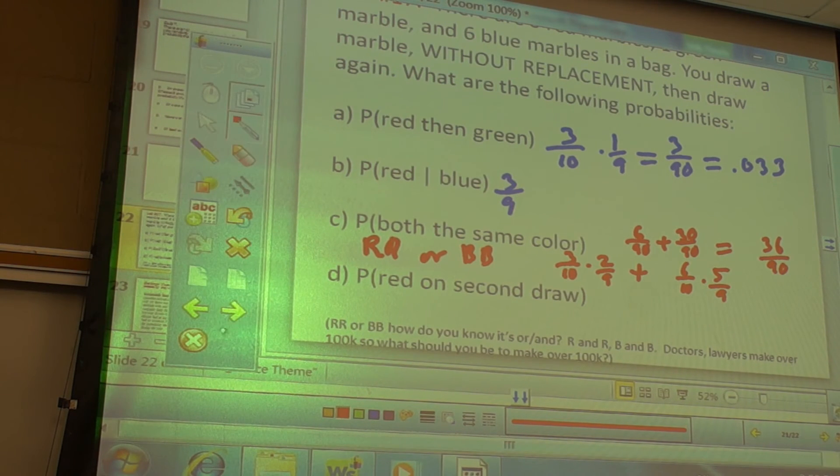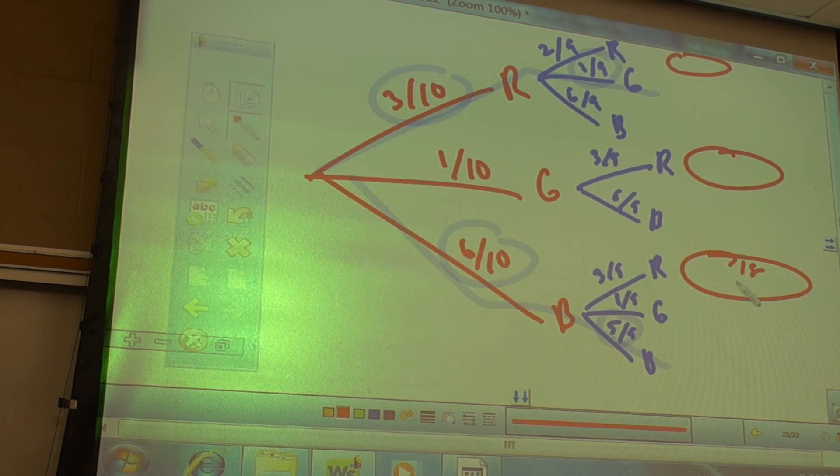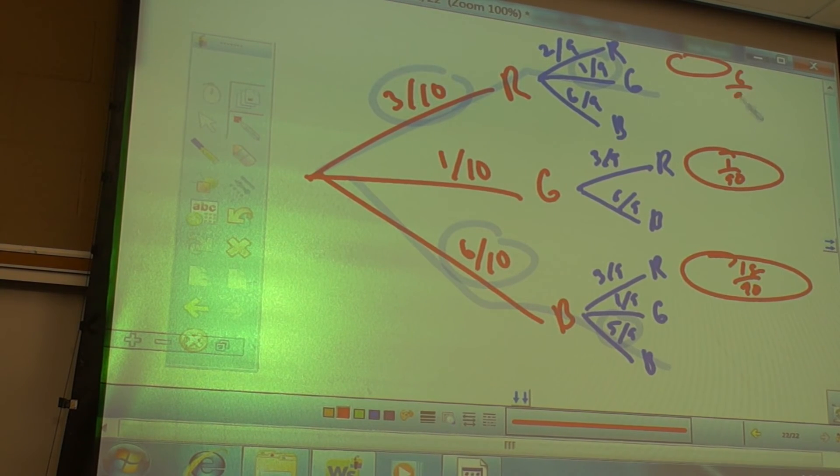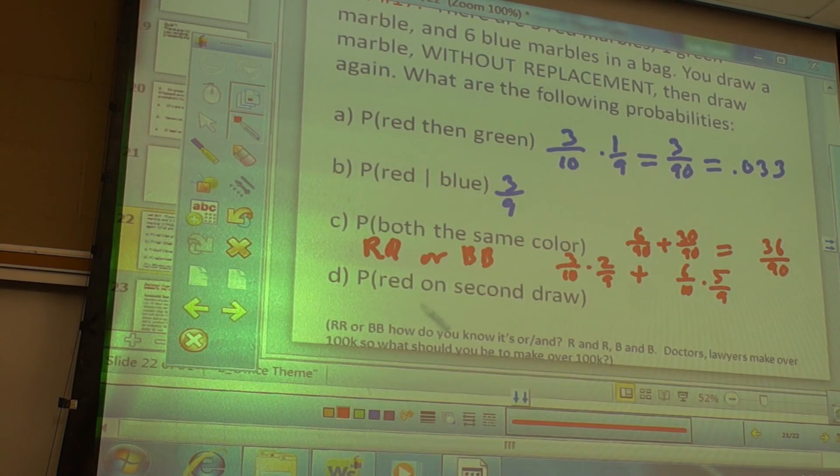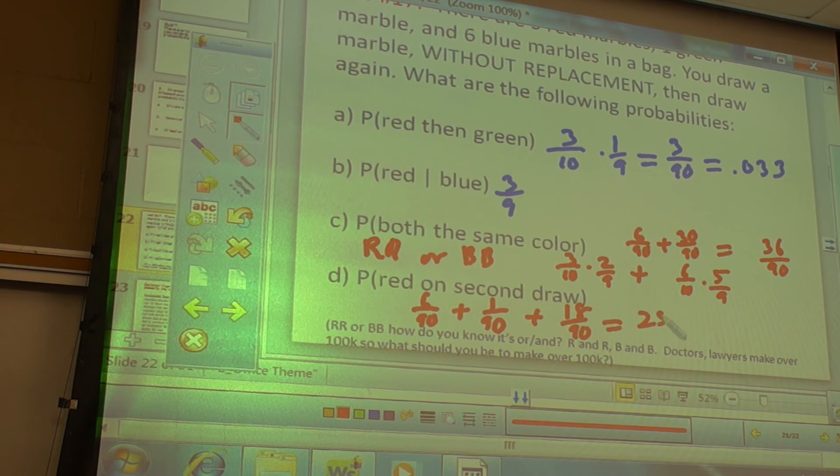Probably red on second draw. Probably red on second draw. So red on second draw means red, red. Or green red. Or blue red. So you can find all those. So it's 6 out of 90, 1 out of 90, 18 out of 90. Or it could be red, red, or green red, or blue red. So that's the last one, 18? 25 out of 90. Or the decimal. I don't know if it's either way is fine.